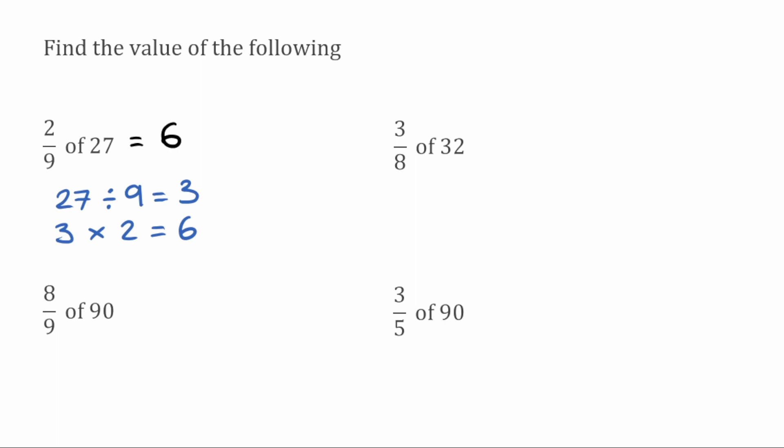We then have 3 eighths of 32. So we take our 32 and we divide by the bottom, so divide by 8. That's going to give us 4. We then take our 4 and multiply by the numerator which is 3. So 4 multiplied by 3 would give us 12. So our answer here would simply be 12.